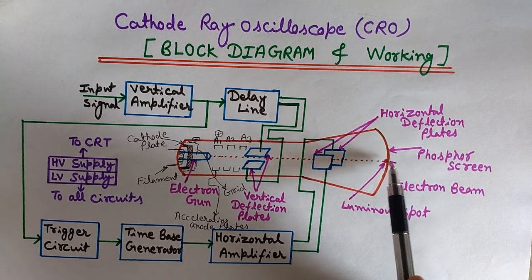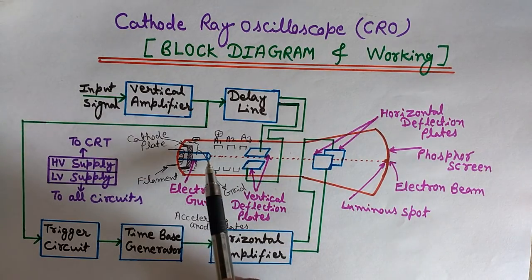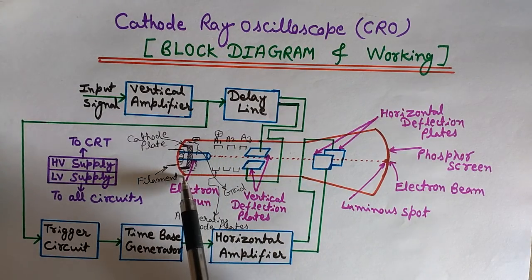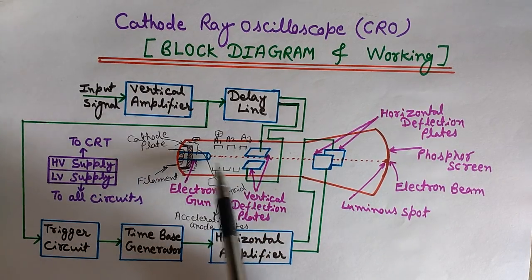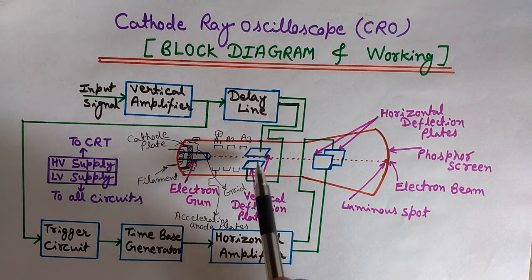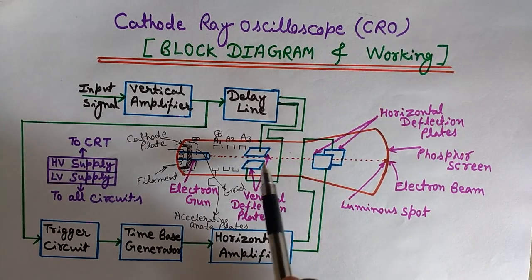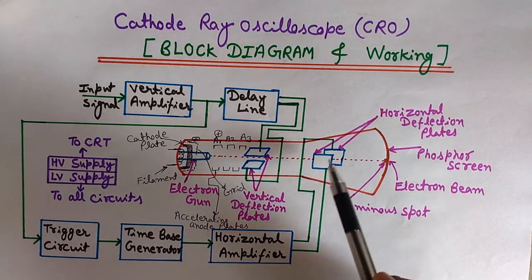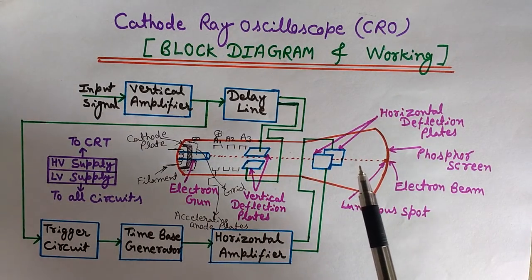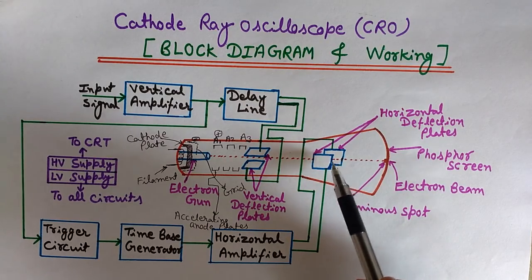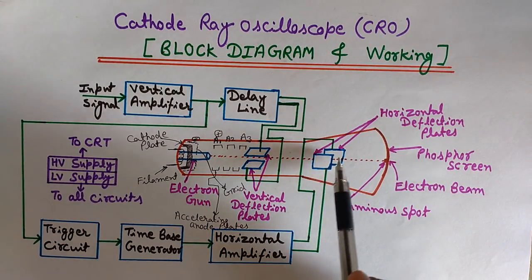We need a high velocity electron beam so that it can reach this phosphorous screen, which is used to analyze the waveform. This part — from the filament to the accelerating anode plate system — is called the electron gun. This electron beam then passes through two pairs of deflection plates: the vertical deflection plates, which move the beam in the vertical direction, and the horizontal deflection plates, which deflect the beam in the horizontal direction.